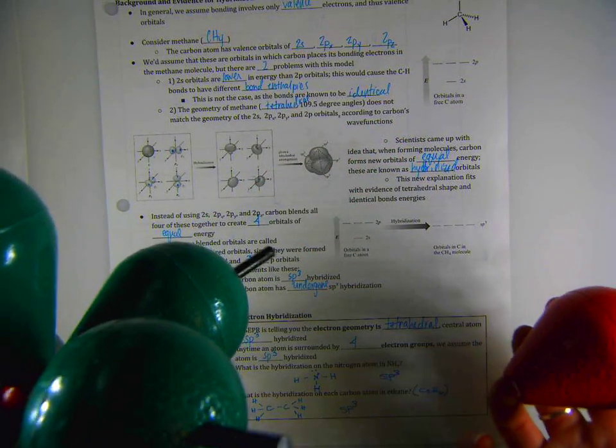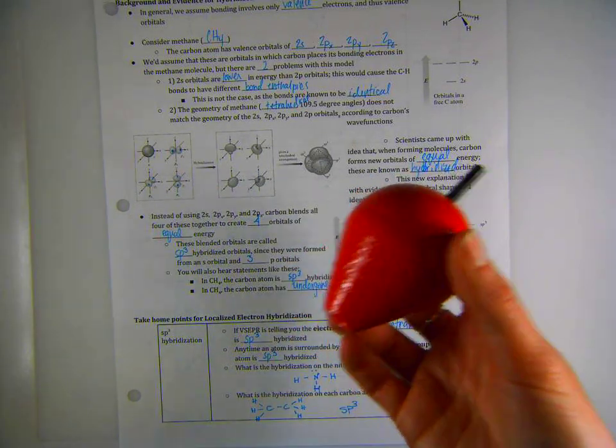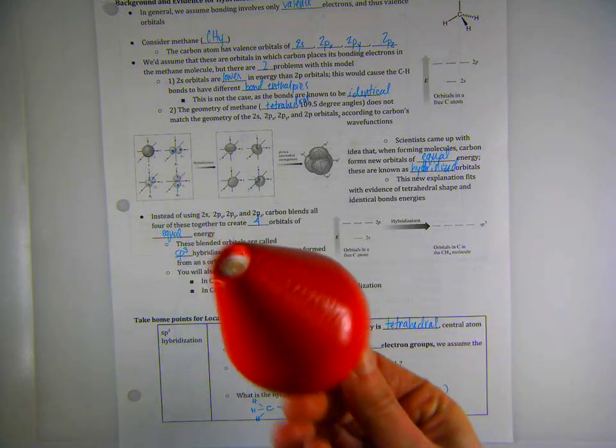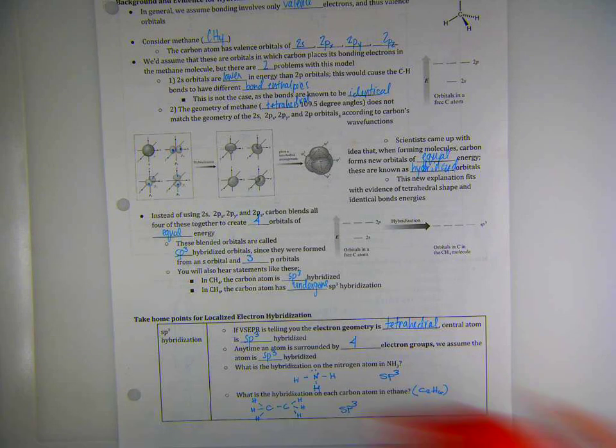So it's kind of like a blend of the green and the red that I showed you. It's the shape of the green, but the color of the red. So this is going to represent one SP hybridized orbital.